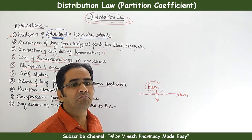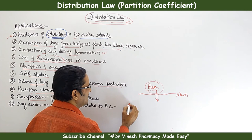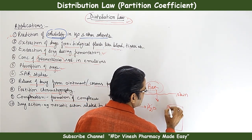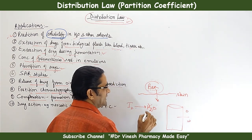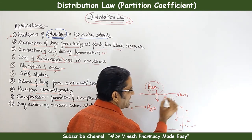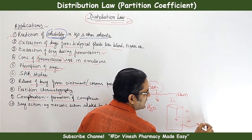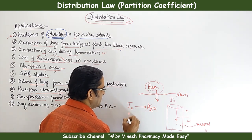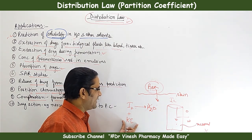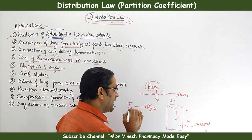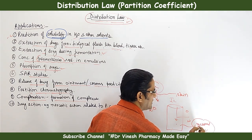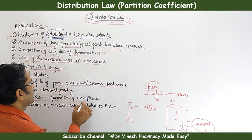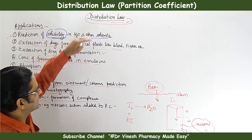Complexation: Distribution law helps predict whether complex formation is useful. For example, iodine is not soluble in water. When added to an oil-water system, no iodine is found in the water phase. However, adding potassium iodide forms a soluble iodide complex (KI₃), and iodine is then found in the water phase. This shows how complexation can increase solubility, and distribution law is used to study this.